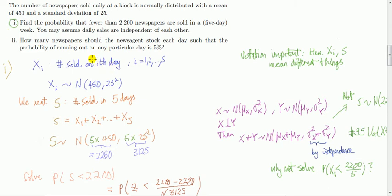Okay, so the first step is set notation. What we've got here is we're told something about the number of newspapers sold in a day. So let's say X_i denotes the number sold on ith day and there are five days. So let's say i is one to five. Then we're told that they're normal. Moreover, they're independent normal. So I can put an I there for independent normal.